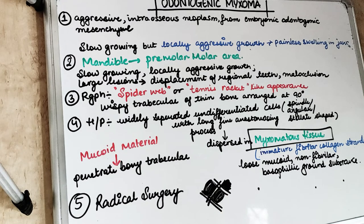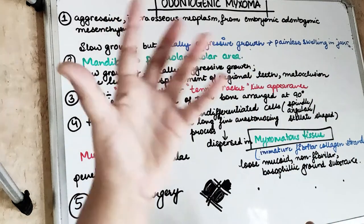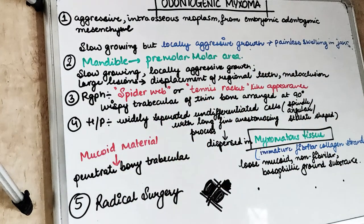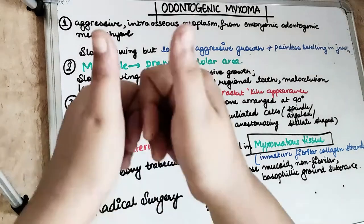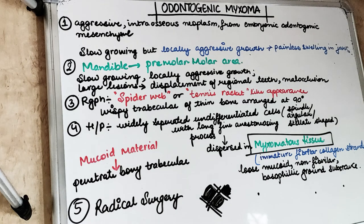So this is about odontogenic myxoma, which radiographically shows the tennis racket appearance, with cells present in the myxomatous ground substance, occurring mostly in the mandibular lower molar and premolar region. If you enjoyed the video, give it a thumbs up and comment below. There is also a link in the description to support on Patreon and PayPal. Till then, keep reading, keep learning, stay motivated — I will see you soon in the next video.